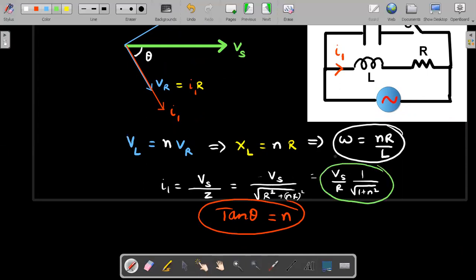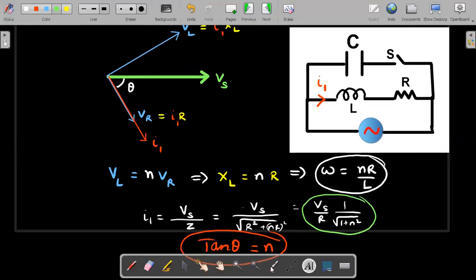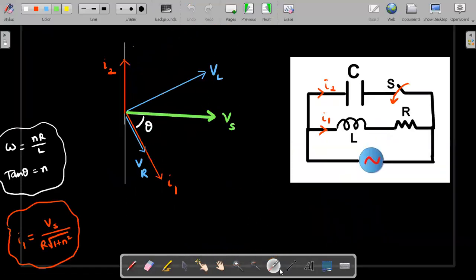When you close the switch, there will be an extra current peeping into your phasor diagram. The current I2 I have represented, I kept the rest of the diagram almost the same. Once you close this switch, this I2 which is generated would be 90 degrees leading the voltage. For capacitance, that would be the condition unlike the inductor. So I have drawn I2 which is exactly 90 degrees lead from the voltage of the source.